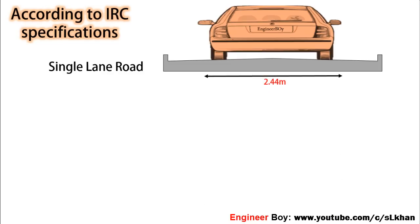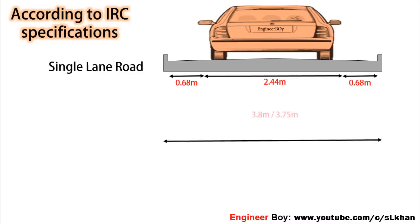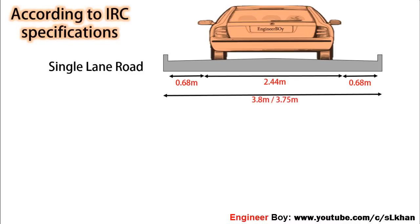According to IRC specifications for carriageway breadth, the maximum permissible breadth of a vehicle is 2.44 meters, and the desirable side clearance for single lane traffic is 0.68 meters. Adding these three parameters, the required minimum lane width is 3.8 meters, which is normally taken as 3.75 meters for a single lane road.